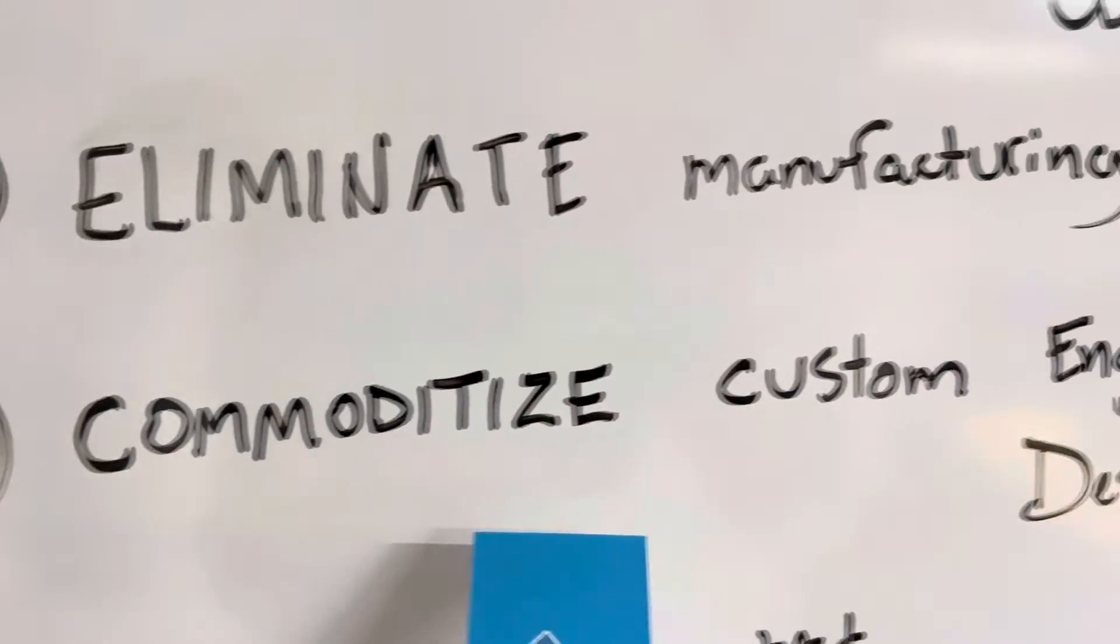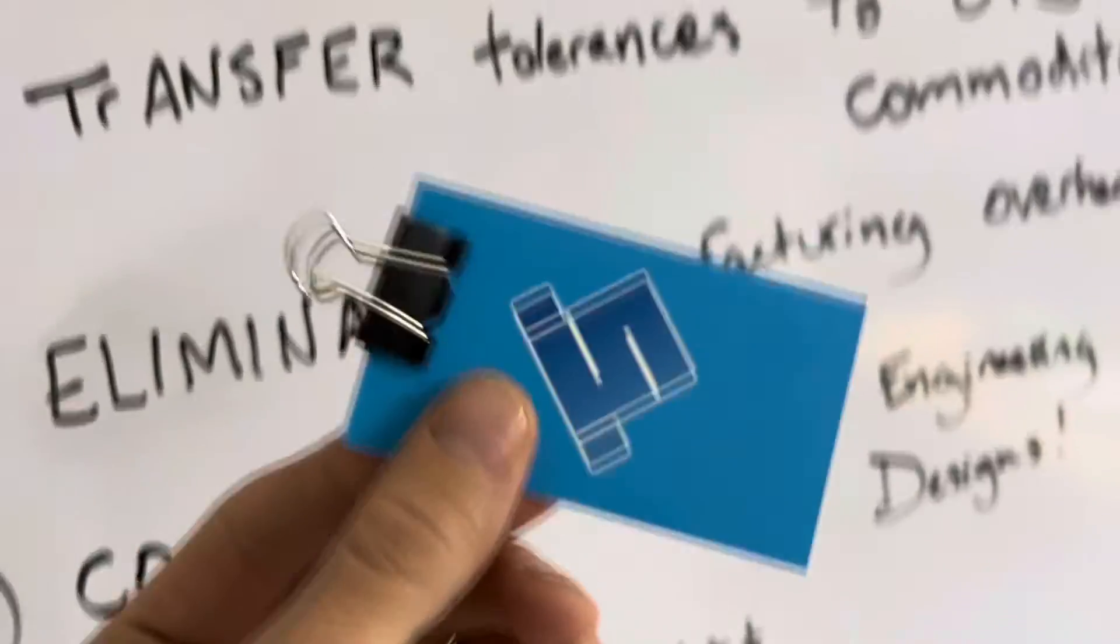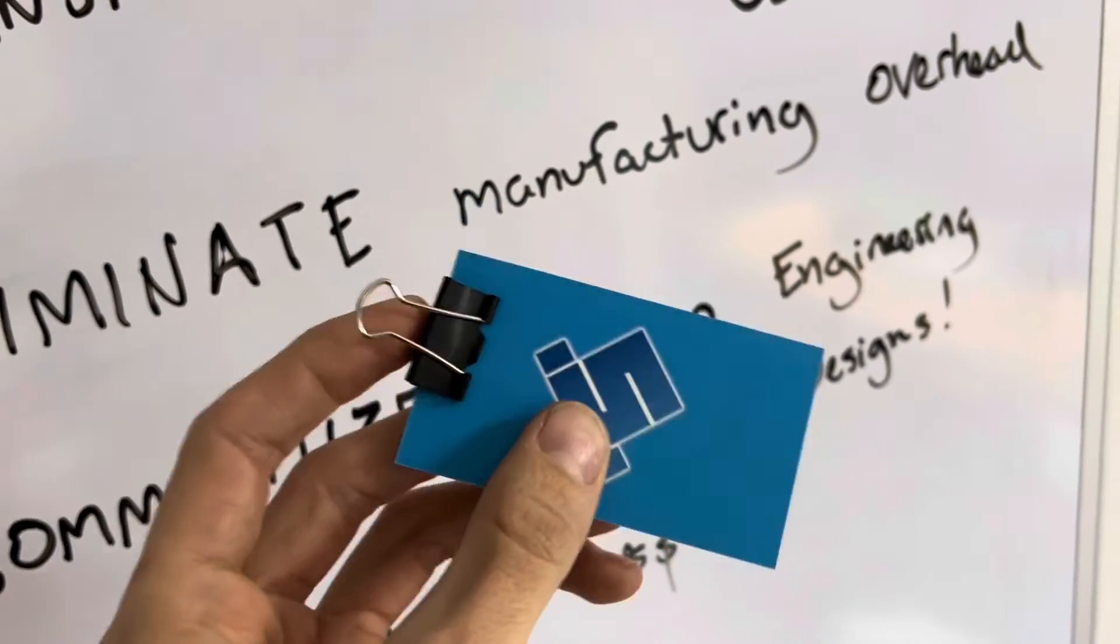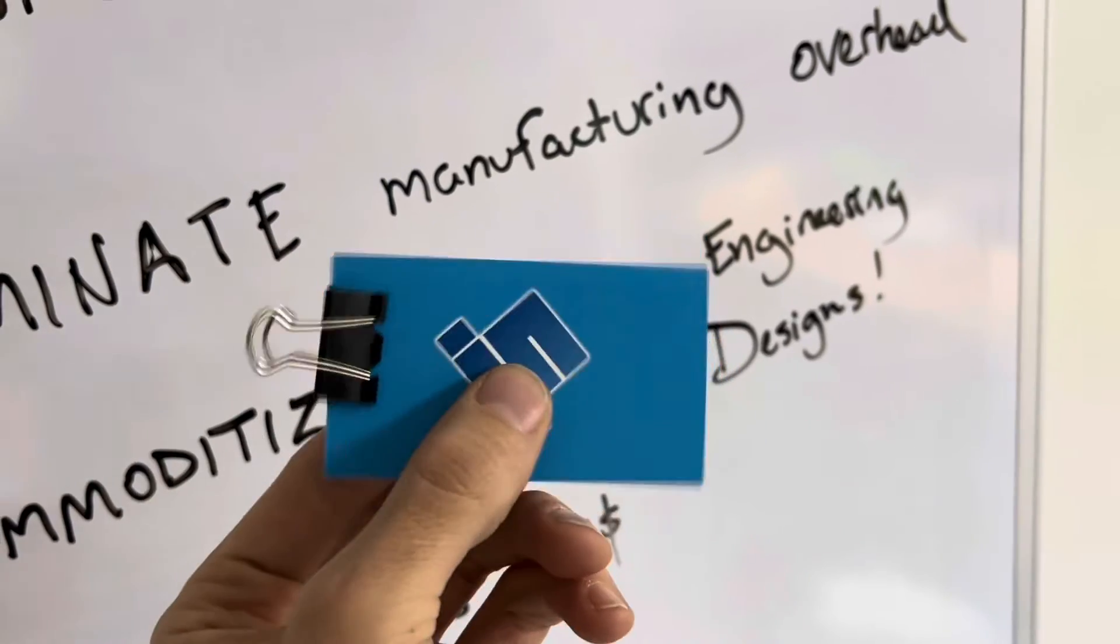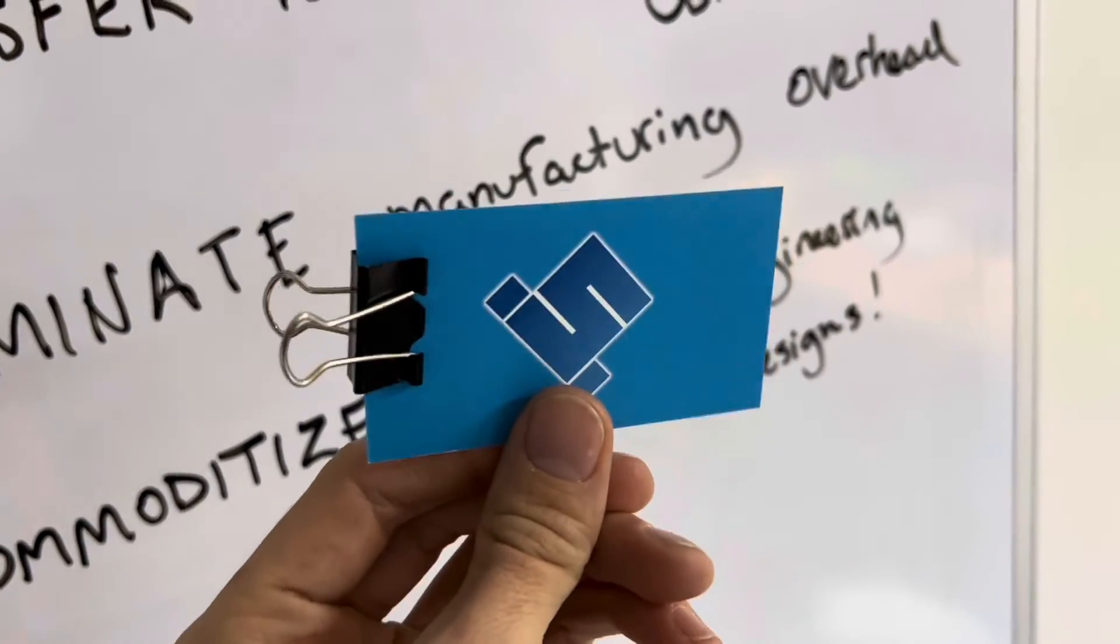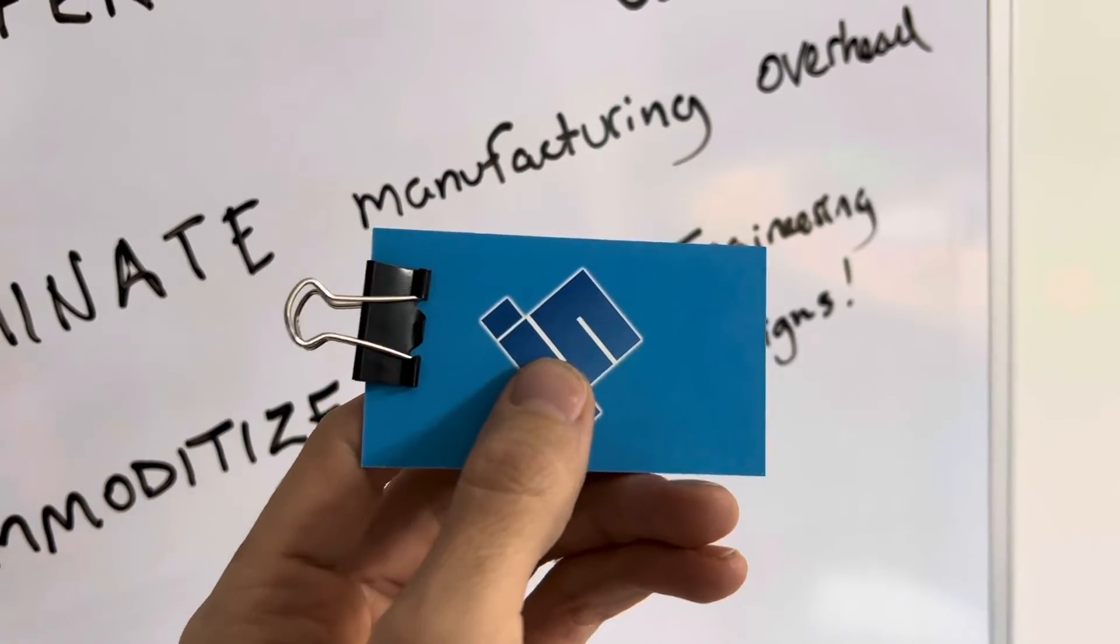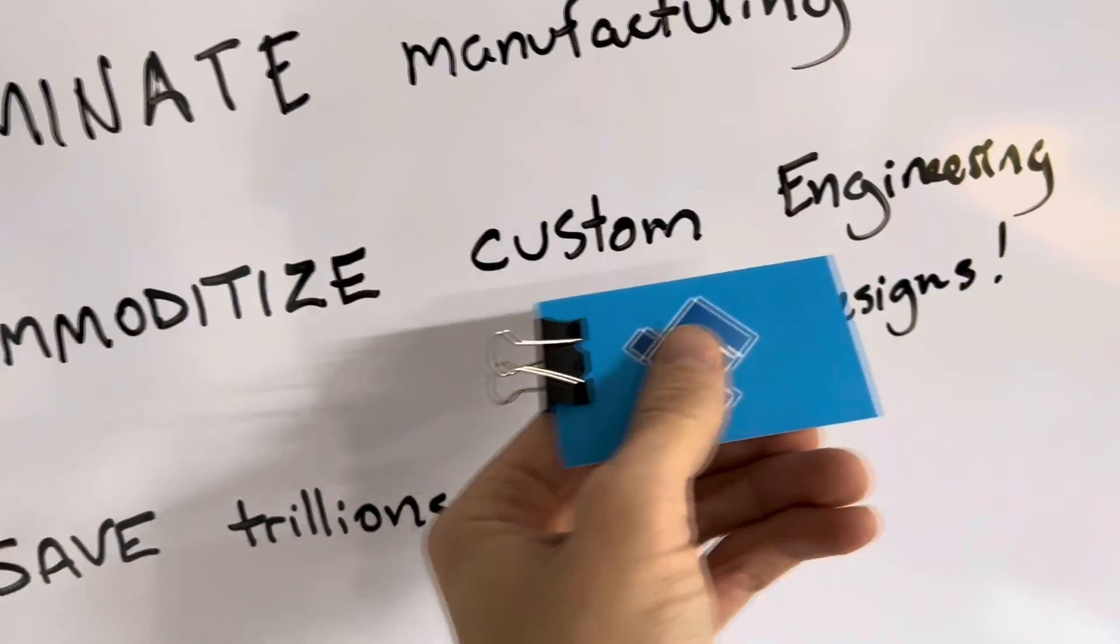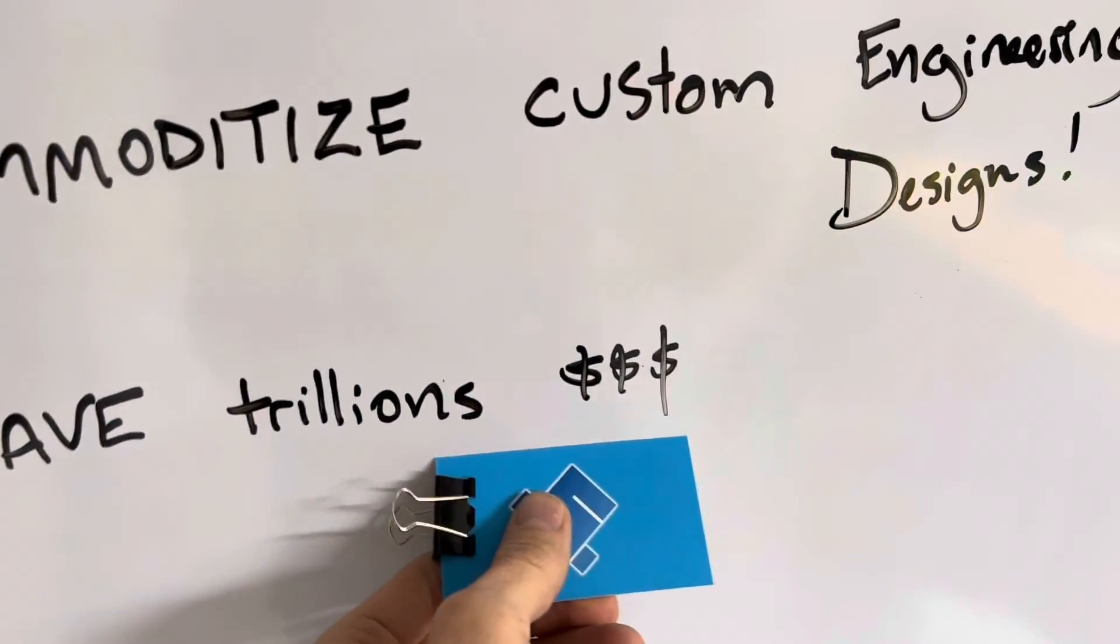Then we're going to commoditize custom engineering designs. Because what do I have in my hand? It's a business card and paperclip - two commodities. It doesn't matter what design is on this business card, it's a commodity and you can change the design any way you want because it's a digital design. Digital design with a standardized process like 3D printing is a commodity. Then we save trillions.